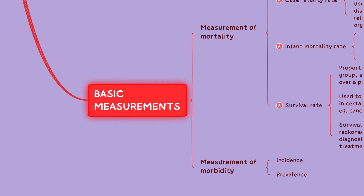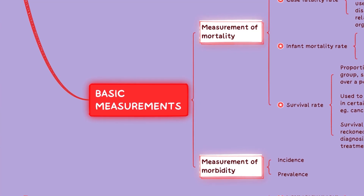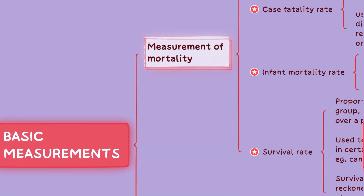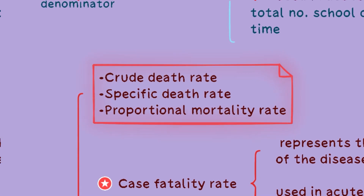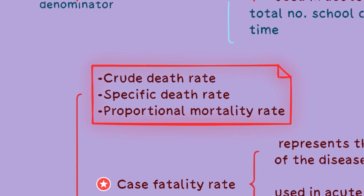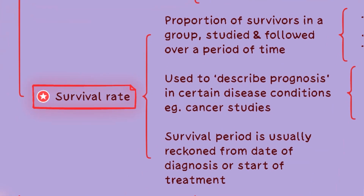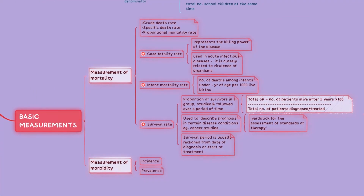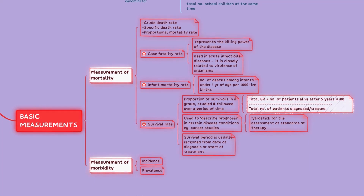Basic measurements in epidemiology such as mortality and morbidity provide valuable information to assess the burden of diseases, monitor trends and evaluate the effectiveness of public health interventions and healthcare systems. Measurement of mortality can be done by different rates such as the crude death rate, specific death rate, proportional mortality rate, case fatality rate, infant mortality rate and survival rate. You can look at a few important points about case fatality rate, infant mortality rate and survival rate in this section of our mind map.